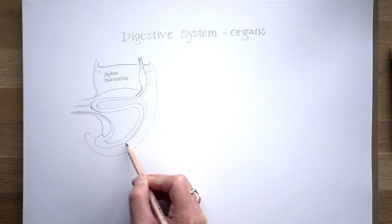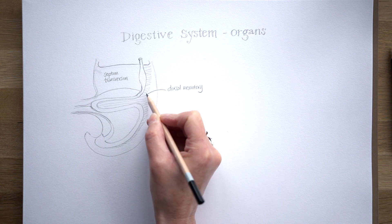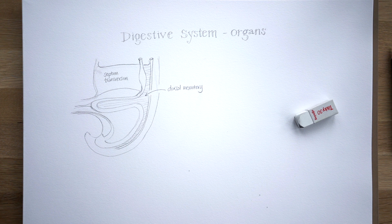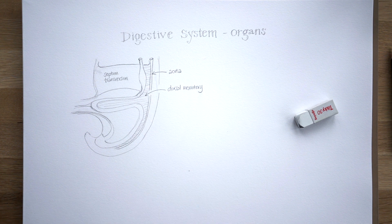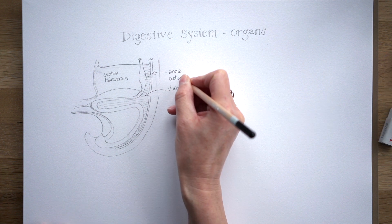All of the gut has a mesentery which connects it to the back wall of the abdomen — a dorsal mesentery — but the stomach has this additional ventral mesentery, formed out of the lower part of septum transversum. There's the aorta, which lies in the posterior abdominal wall behind that dorsal mesentery, and blood vessels are going to reach out to the gut through the dorsal mesentery, so the mesentery conveys those blood vessels out from the aorta.